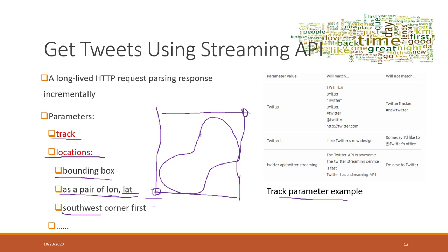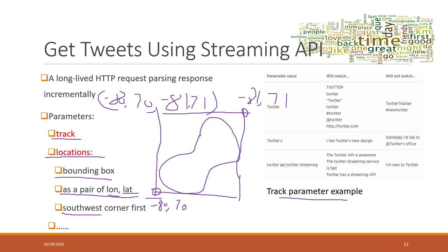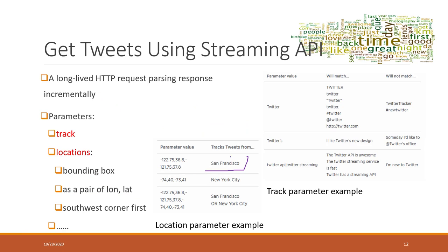For example, this longitude is minus 80 and latitude is 70, and this one will be minus 81 and 71. So the bounding box will be those four numbers — southwest corner first, with latitude first and longitude second. Here are some examples: if you are collecting tweets from San Francisco, that's how the parameter looks, and if from New York, that's how the bounding box looks.